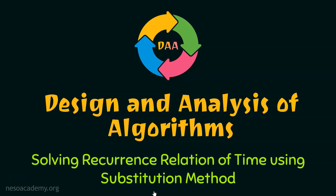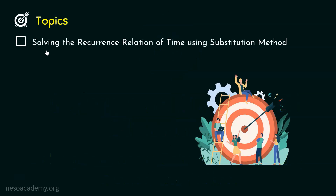The topic of this lecture is solving the recurrence relation of time using the substitution method. This means we will cover step two — solving the recurrence relation — and also step three, which is representing the result using asymptotic notation. We will first complete step two and then step three.